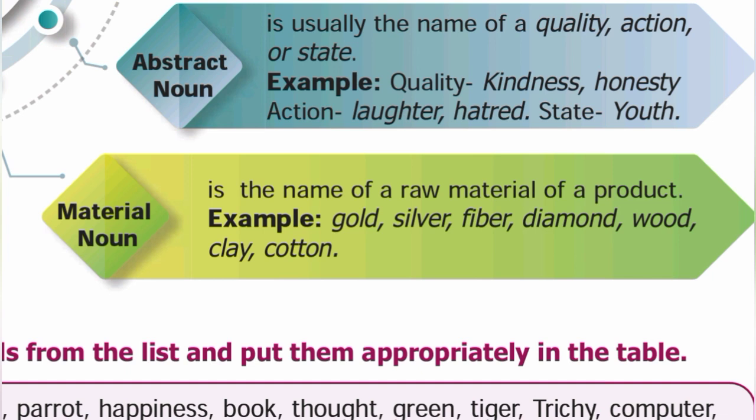Other examples of material nouns are silver, fiber, and diamond. If you have a bench or chair, the raw material is wood — so wood is a material noun. Similarly, plastic, clay, and cotton are material nouns, as they are raw materials used to make products.